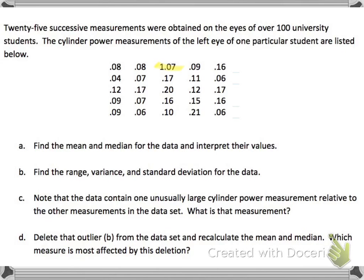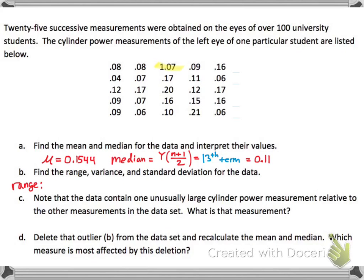Now we have a simple problem where we have 25 measurements obtained over 100 university students — something about their eyes. Let's find the mean and the median. For the mean, you add up all those digits and divide by the total number, which is 25, and you should get 0.1544. For the median, you take the number of terms (25), add 1 to get 26, divide by 2 to get 13 — so you take the 13th term. Make sure you put the data in order; you should get 0.11 as the 13th term. For the range, take the largest value minus the smallest: 1.07 minus 0.04 gives a range of 1.03.